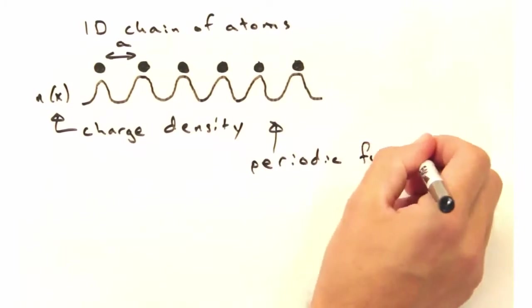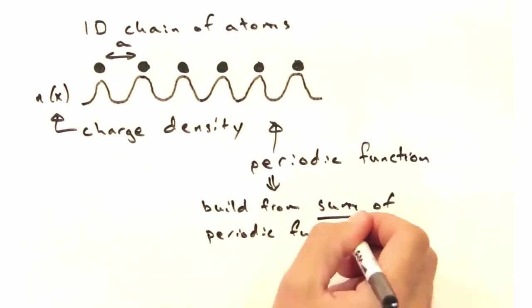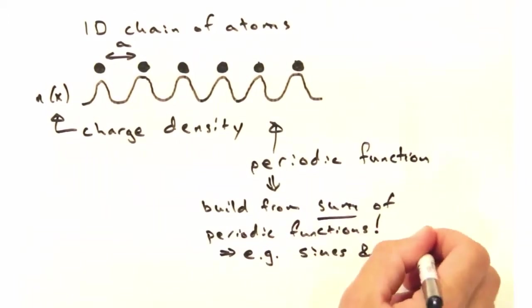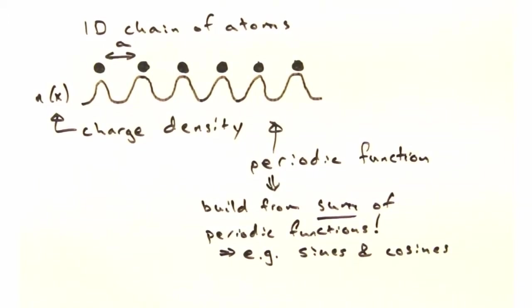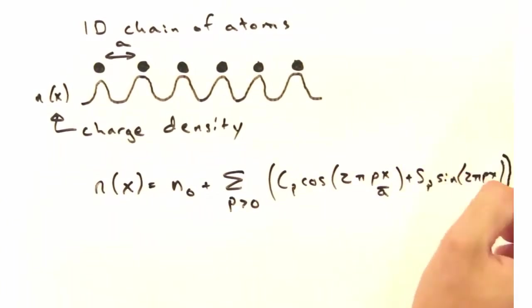So this may be a little disconcerting at first because we may not have an exact equation for n of x. But because we have something periodic, we can build it using a sum of other periodic functions, like sines and cosines. This sum is what we call a Fourier series.